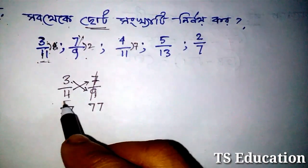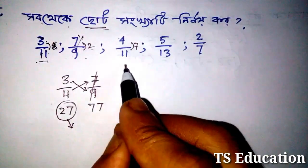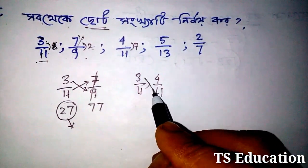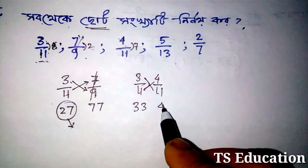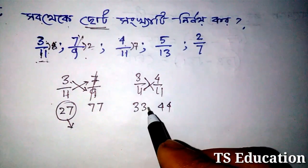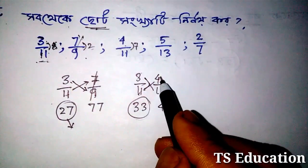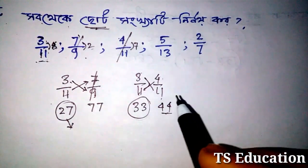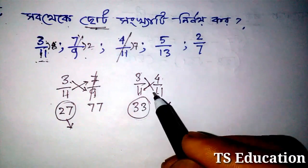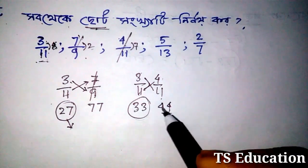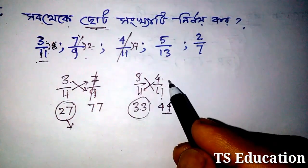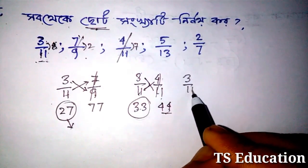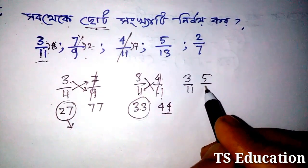We look at the smaller value — the difference between the two. We see the smaller one is 3 by larger.